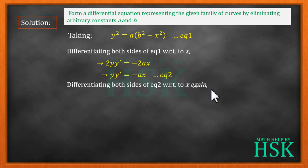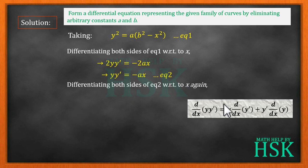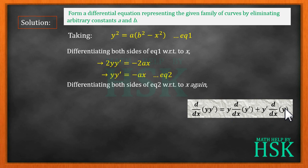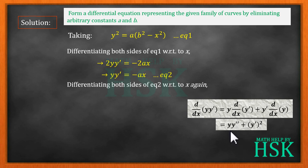Now I differentiate equation two with respect to x again. The differentiation of y·y' on the left-hand side uses the product rule: d/dx(y·y') = y·d/dx(y') + y'·d/dx(y). I've done this separately because it can be a bit confusing. This gives y·y'' + (y')².